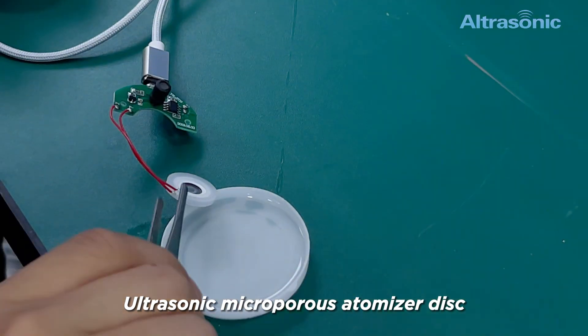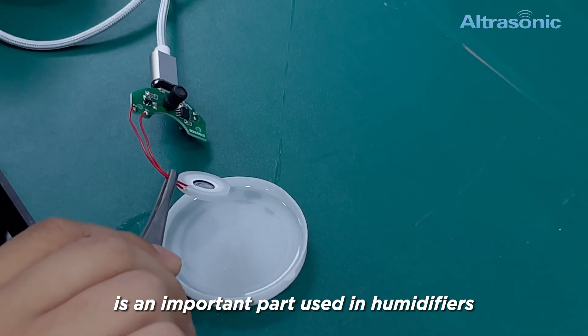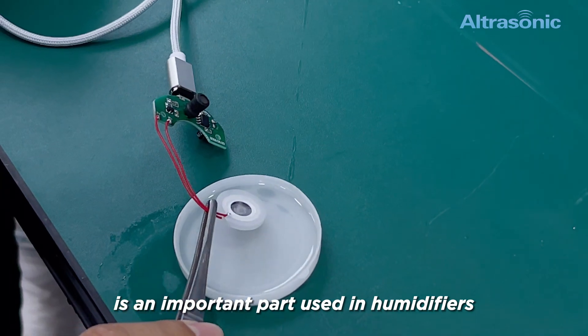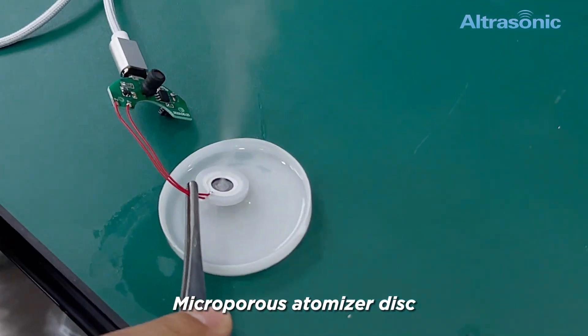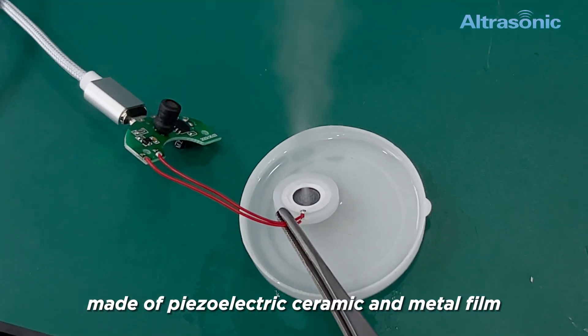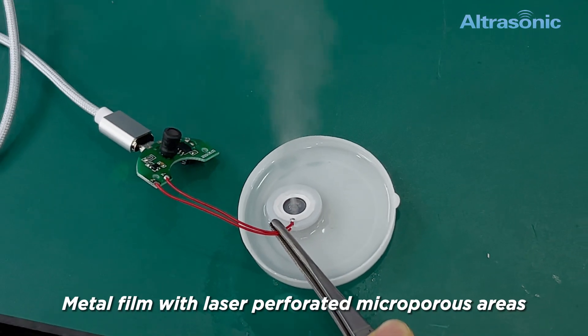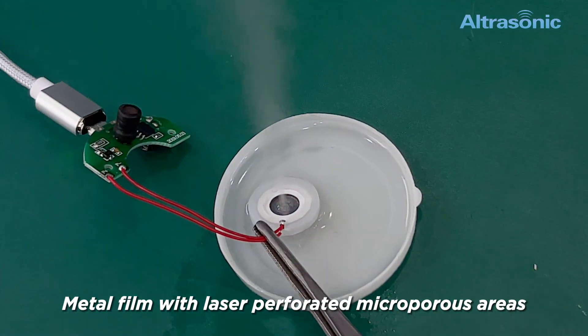Ultrasonic microporous atomizer disc is an important part used in humidifiers. Made of piezoelectric ceramic and metal film, the metal film has laser perforated microporous areas.